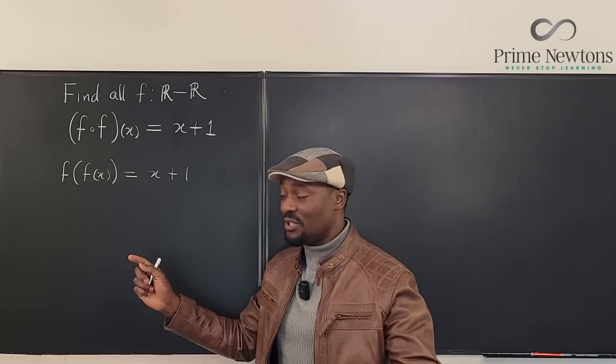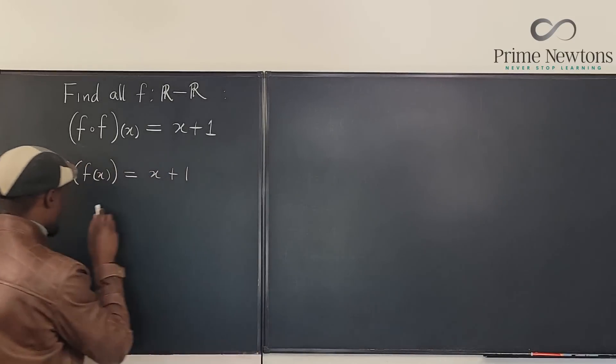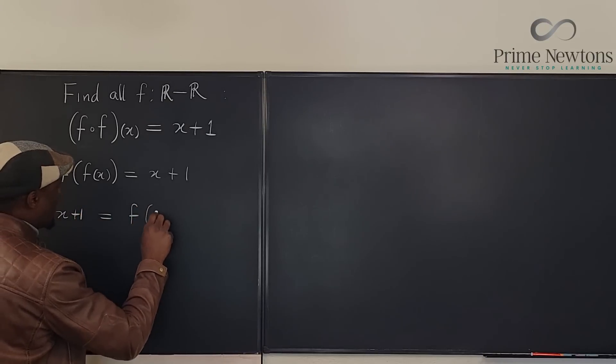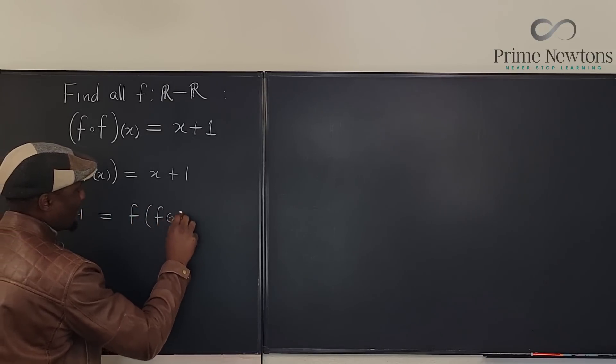You see, this makes things a lot easier. Now see what I'm going to do. I'm going to rewrite this. Move this here and say x plus one is equal to f of f of x.